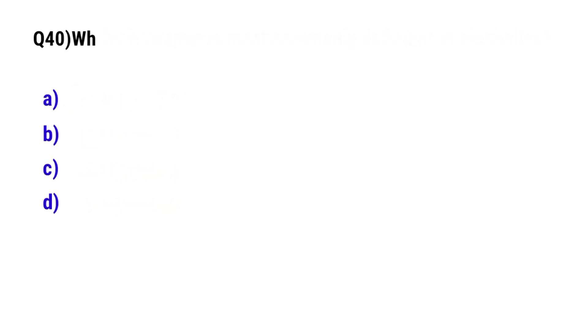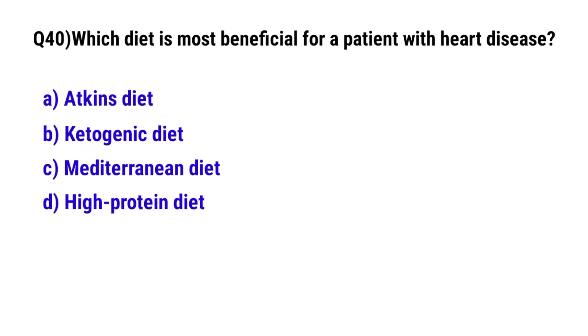Question number 40: Which diet is most beneficial for a patient with heart disease? The correct option is C: Mediterranean diet.